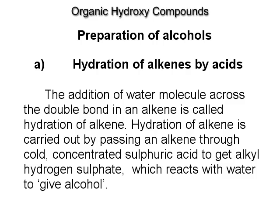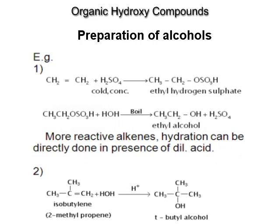Hydration of alkenes by acids. The addition of a water molecule across the double bond in an alkene is called hydration of alkene. Hydration is carried out by passing an alkene through cold concentrated sulfuric acid to get alkyl hydrogen sulfate, which reacts with water to give alcohol. For more reactive alkenes, hydration can be done directly in the presence of dilute acid.